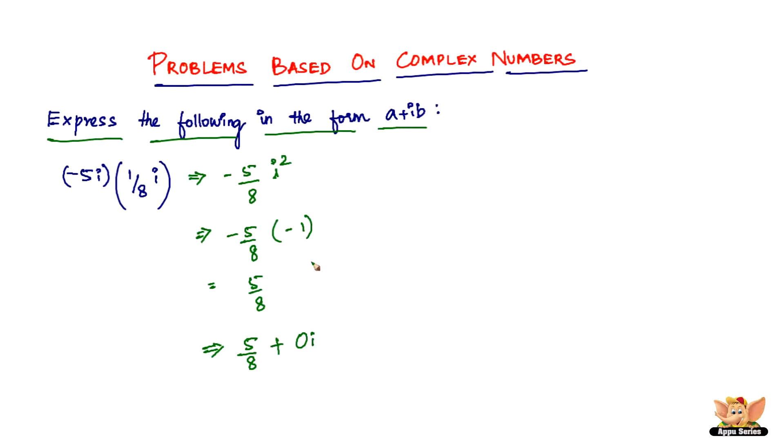That ends this problem, let's quickly solve another. Here we've got a problem which says express the following in the form of a plus ib. So it is minus i times 2i times minus 1 by 8i the whole cube.